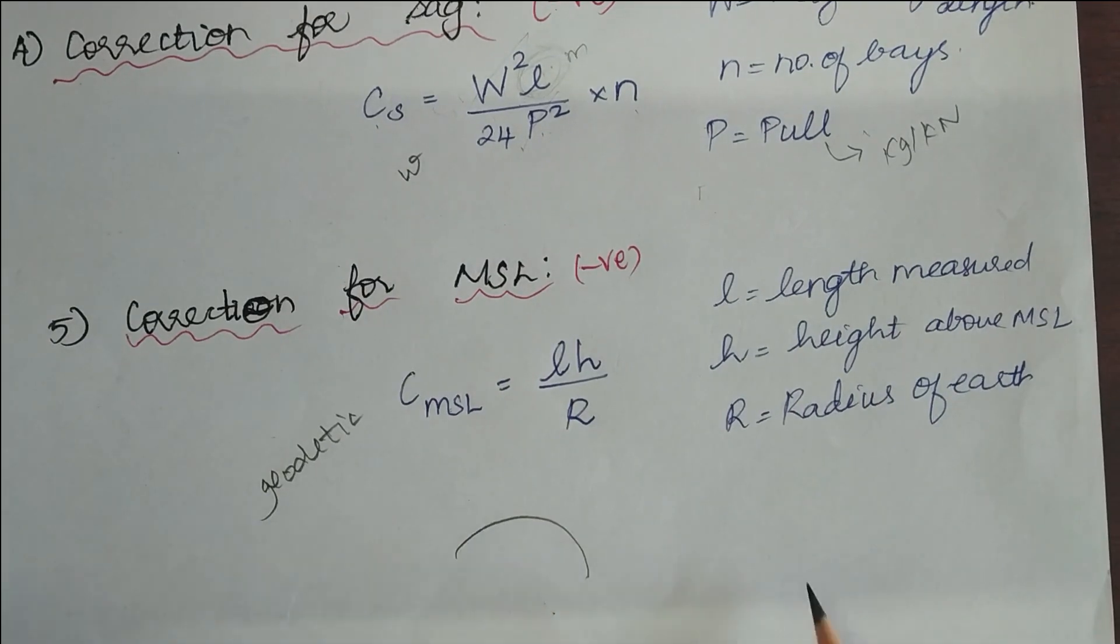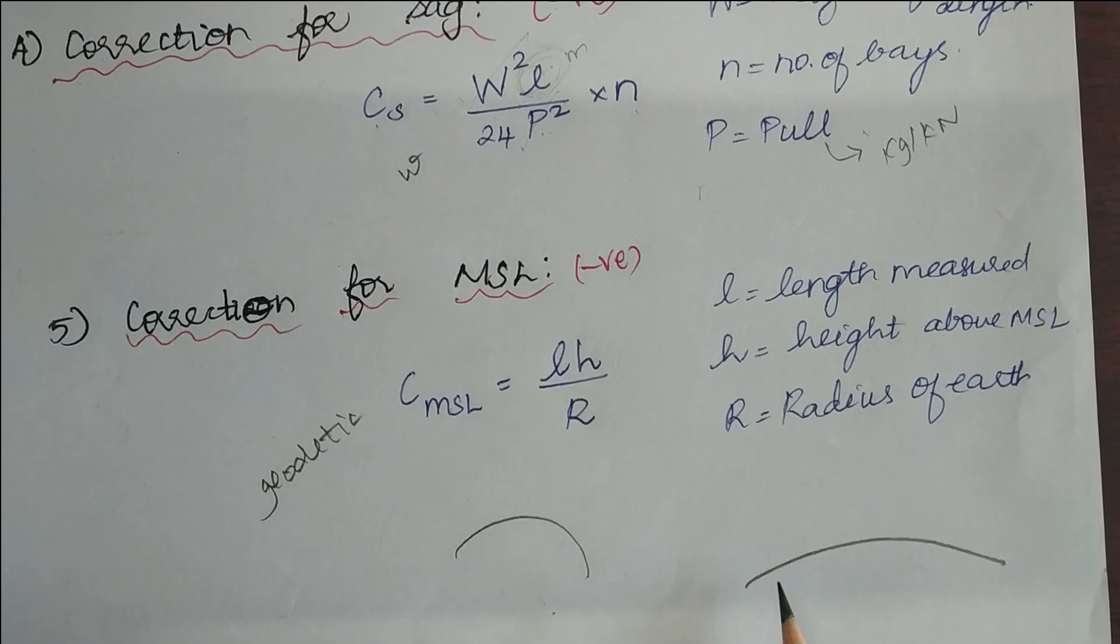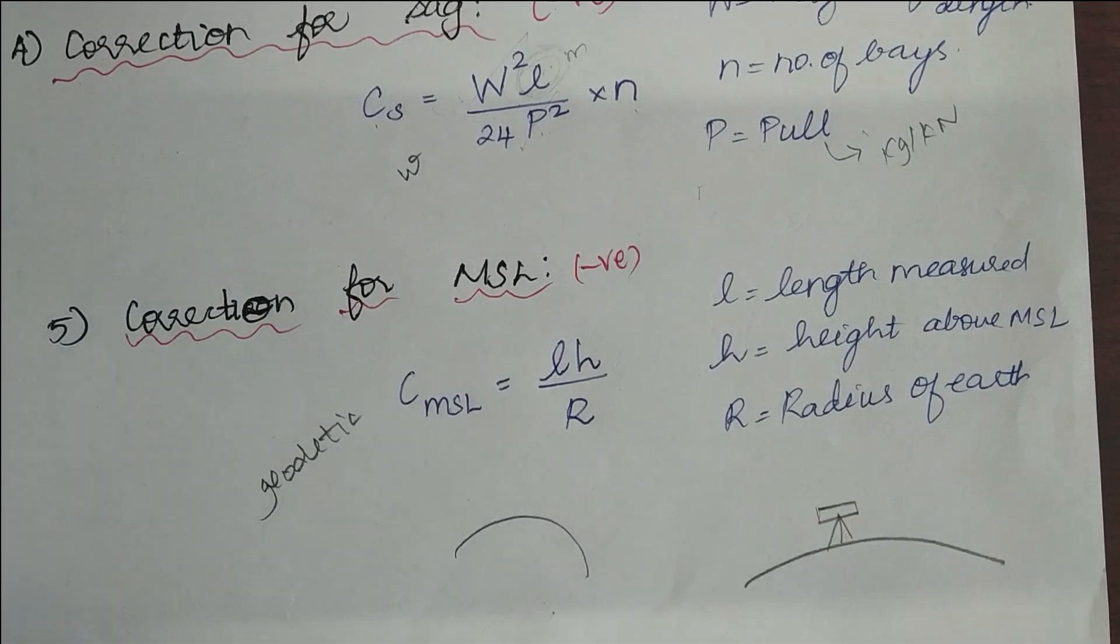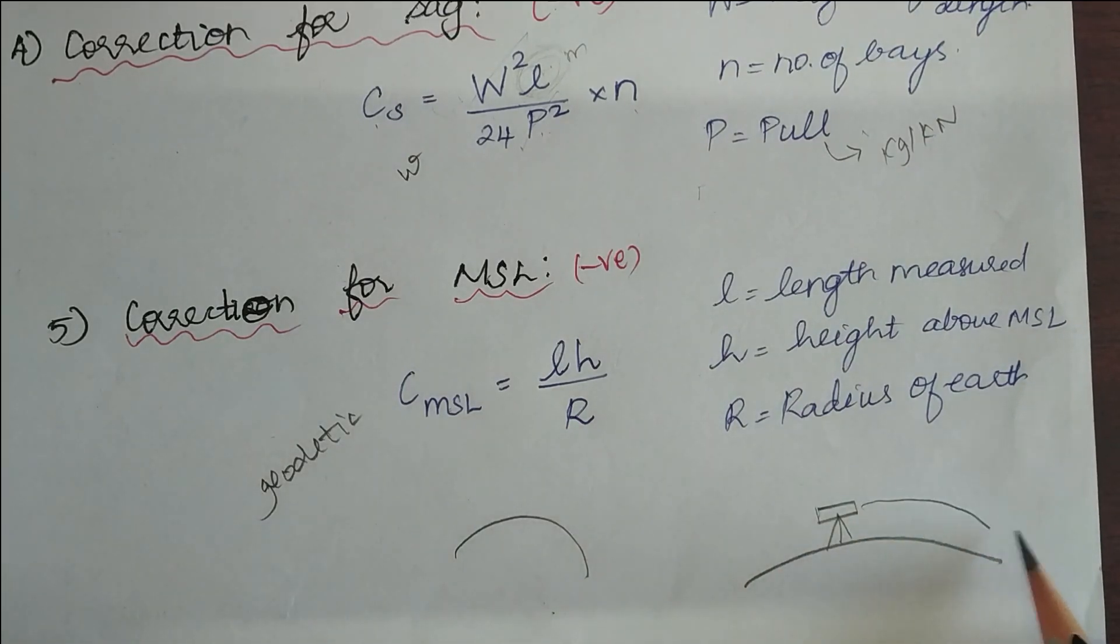So in that case, say let's take this. Our earth is not a flat surface. It is a curved surface. In that case, the original length in geodetic surveying is going to be this. Say this is the point where I have to measure. The original length is going to be this. And say the height is h.